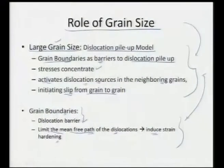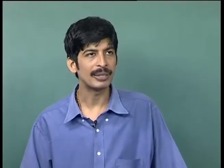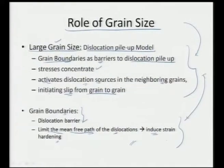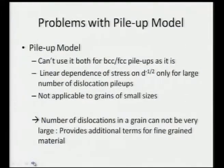In a nanocrystalline material we have more number of grain boundaries and a very high grain boundary area. That will generate more dislocation sources in nearby grains. Even if grain boundaries are acting as dislocation pile-up barriers, they will also induce stresses — they will limit the mean free path of dislocations and require much higher stress to overcome that obstacle, resulting in much more strain hardening. But again there are some problems with the pile-up model.